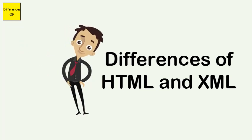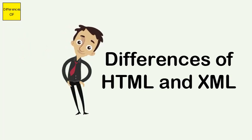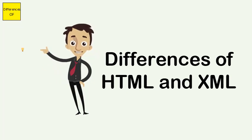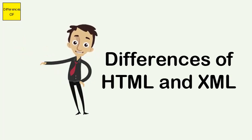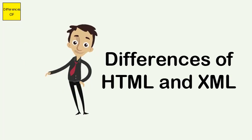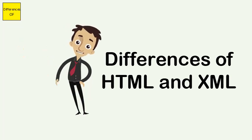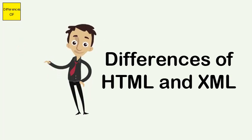HTML is defined as a Markup Language for displaying web pages in a web browser. XML is defined as a Markup Language that defines a set of rules for encoding documents that can be read by both humans and machines. HTML is designed to display data with focus on how the data looks, while XML is designed with focus on storing and transporting data.